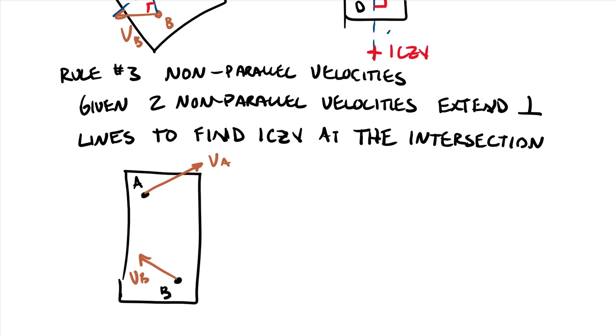So each individual vector, you'll extend a perpendicular line to that velocity. And the same thing here for VB, in this case it's not very far away. So this point of intersection between them will be the ICZV.